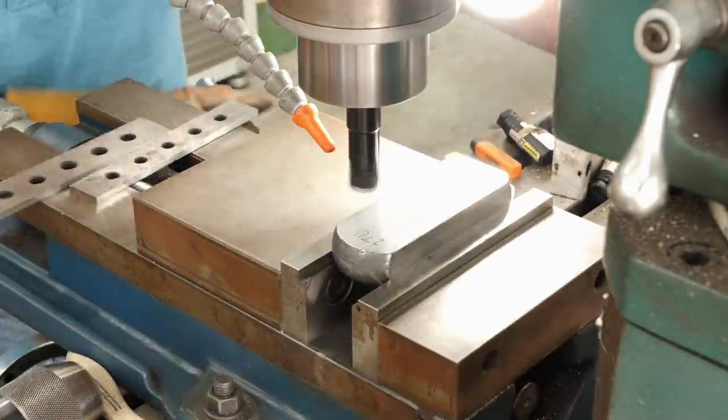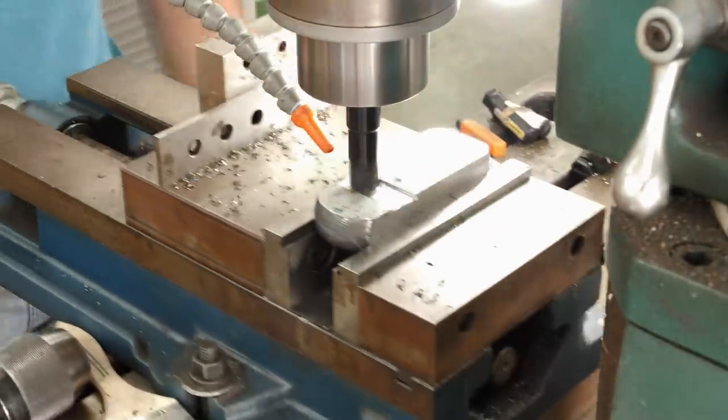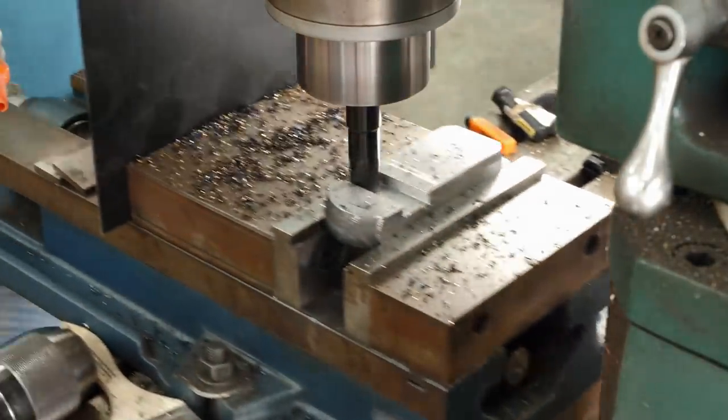Once the bar is squared up, I begin hogging off material. We need to remove about a quarter inch of material on each side of the frame handle and leave the very pommel end alone. That's where the integral bolster will be.